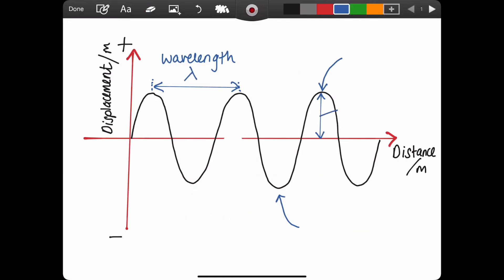So you need to be able to label a wave. You need to be able to label the wavelength given the symbol lambda, the amplitude which is from the line of zero displacement up to a crest. It could be also down to a trough as well and obviously the crest and the trough.